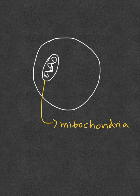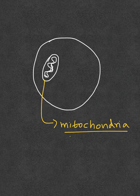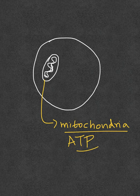Eukaryotic cells have another organelle known as the mitochondria — the energy powerhouse of the cell. It helps produce energy in the form of ATP, which is required for various reactions within the cell.